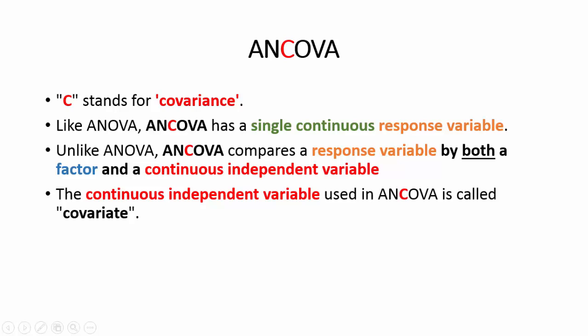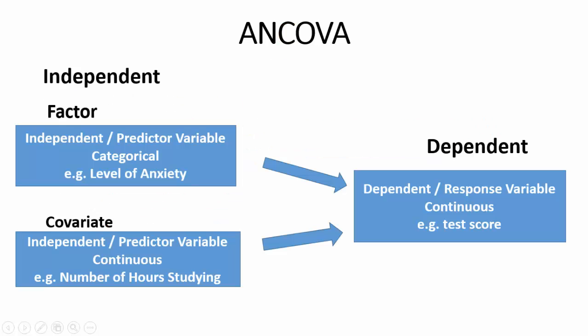But unlike ANOVA, ANCOVA compares the response variable by both a factor and a continuous independent variable. The continuous independent variable used in ANCOVA is called the covariate. As we see in this ANCOVA example, we have two independent variables: an independent factor, which is a categorical variable, and a continuous covariate. Again, there is a single continuous response variable.